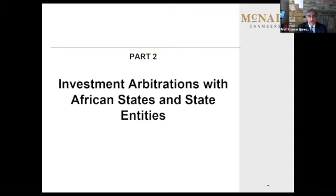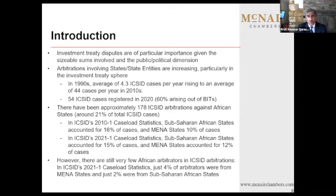Africa features significantly in investment treaty disputes, features significantly in commercial arbitrations, but is woefully inadequately represented. In the 1990s, there were around four or five cases per year before ICSID. That then exploded in around 2010 to 44. In 2020, 54 cases — literally one a week — registered in the International Center for the Settlement of Investment Disputes, mostly arising out of bilateral investment treaties. So far, there have been around 178 ICSID arbitrations against African states — that's a fifth of the total. We are hovering around a fifth to a quarter of all investment treaty disputes before ICSID involving African states, including Middle East and North African states and sub-Saharan African states.